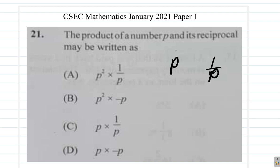So remember that. Now here, the product of the number P and its reciprocal would be P times 1 over P, P divided by P. In this case, C would be the only answer.